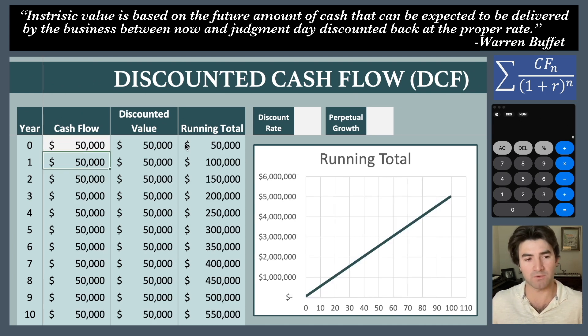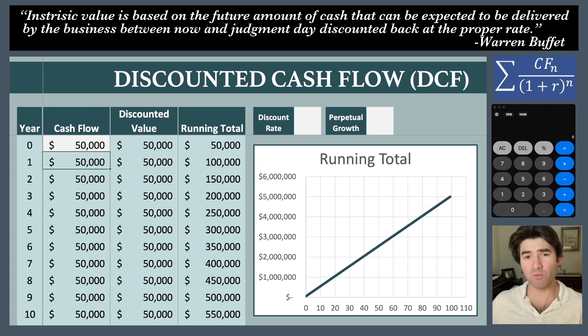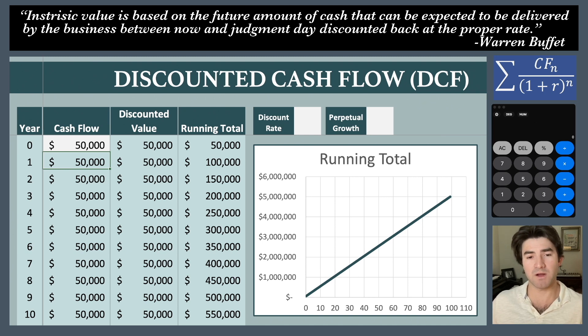Let's say you have a company that's generating fifty thousand dollars of cash flow per year. After 100 years, they're going to have generated five million dollars of cash. However, we still have two other things to consider: the discount rate and the perpetual growth rate.